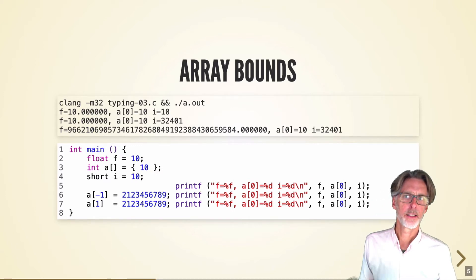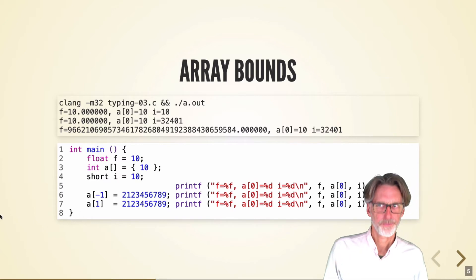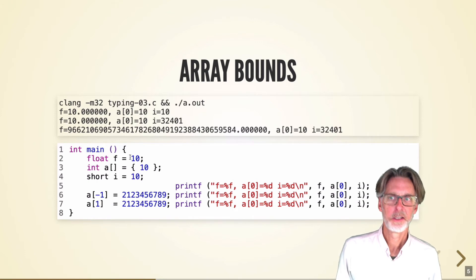When I ran this earlier today, this is the output I got on Ubuntu. So you can see here, initially, everything is as we expect, 10, 10, 10. So F is 10, A is 10, I is 10.